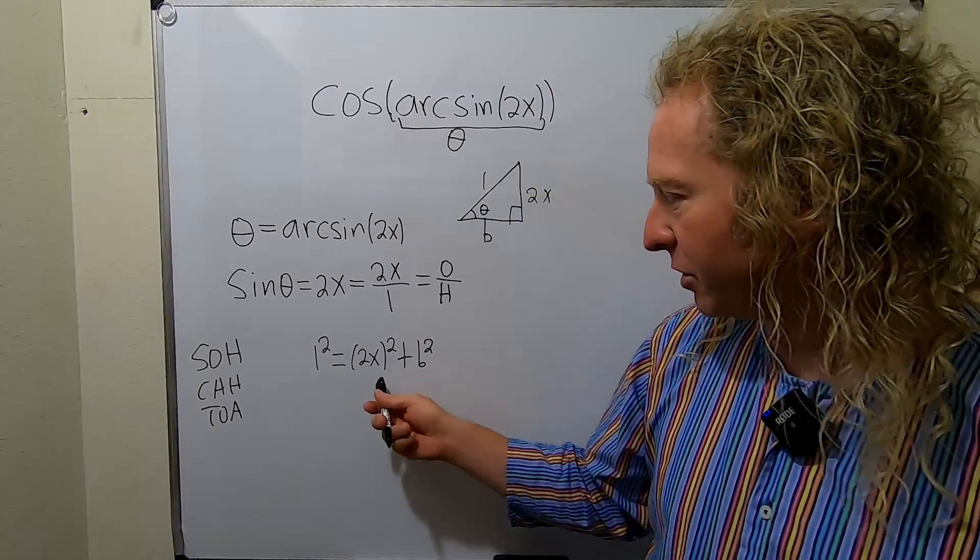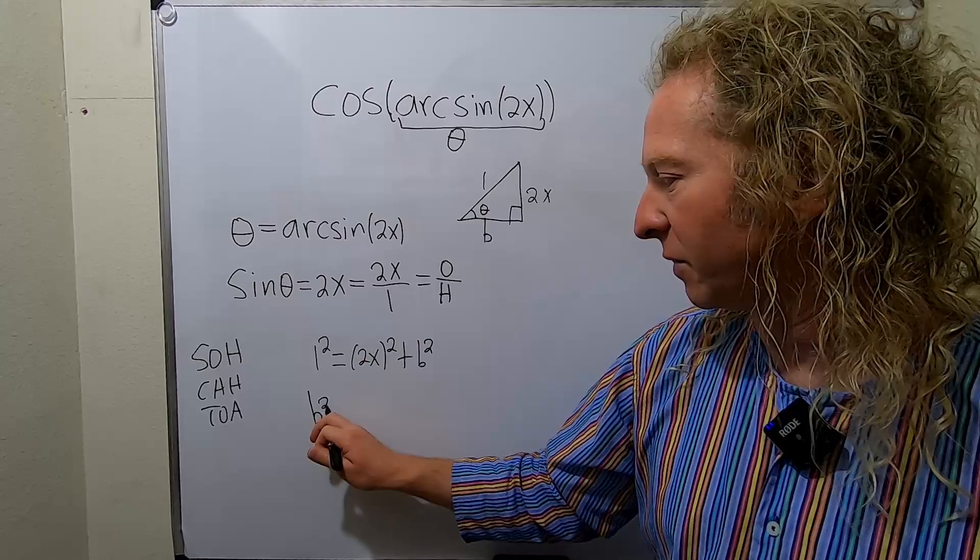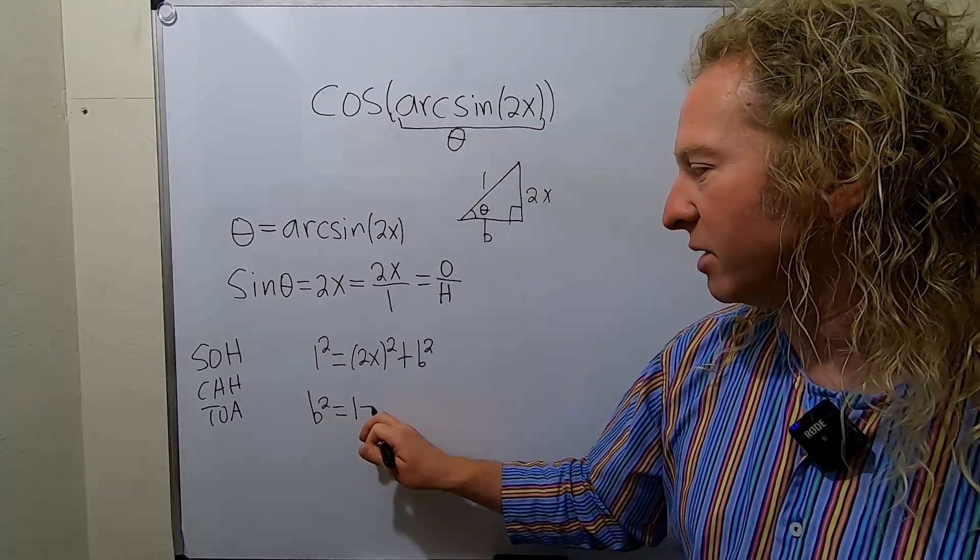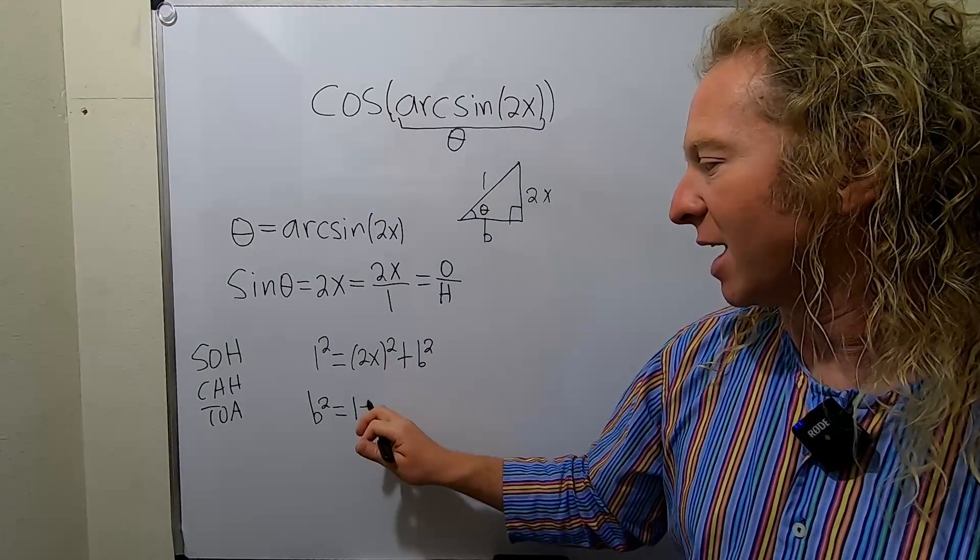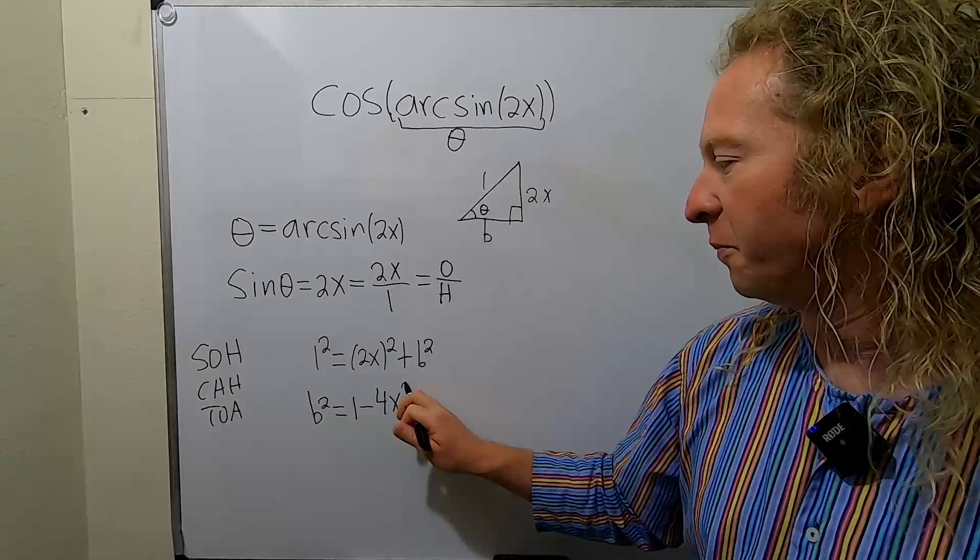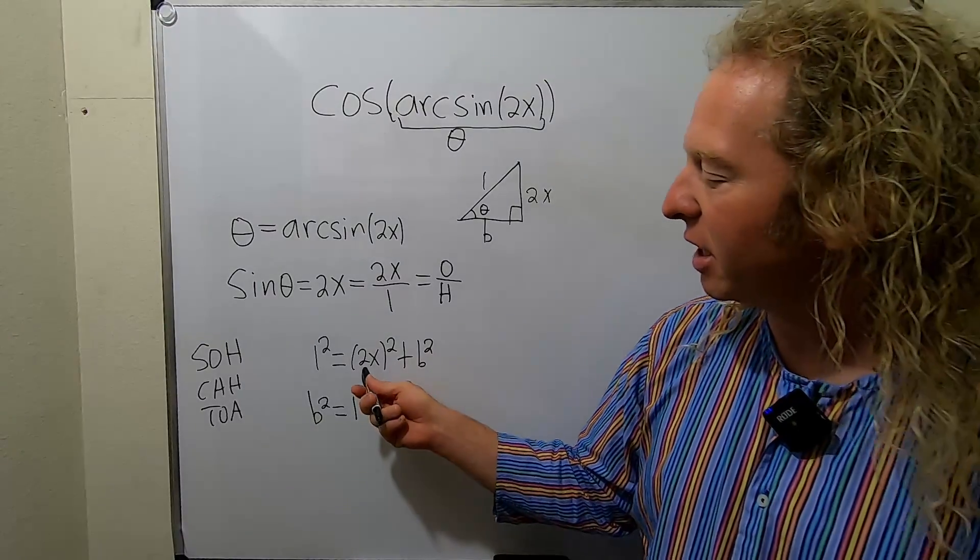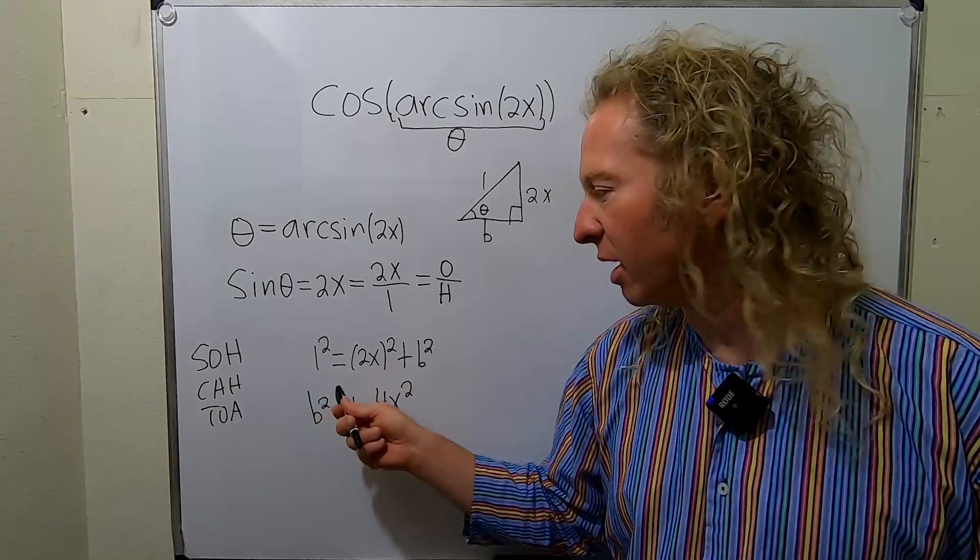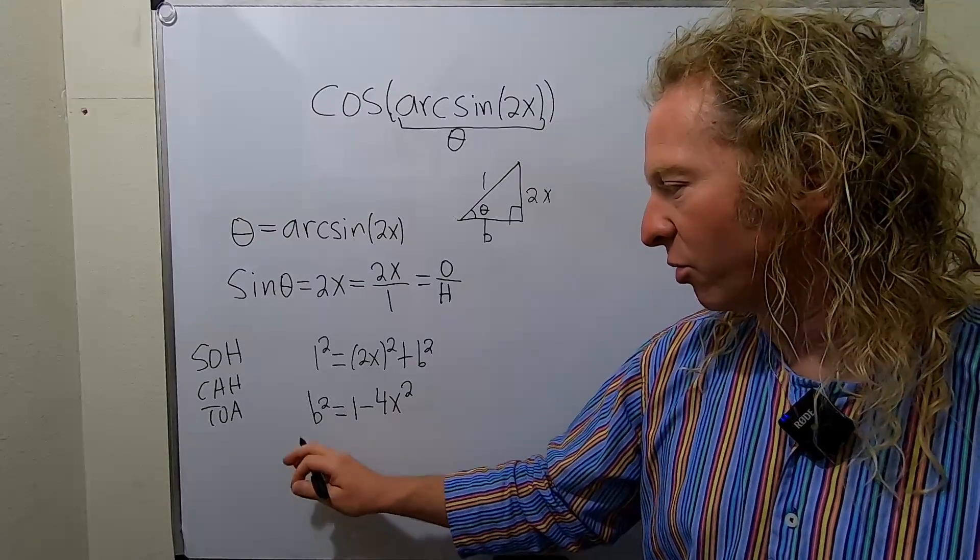Solve for little b. So we'll subtract this piece. So we have b squared equals 1 minus, let's go ahead and multiply this out, 4x squared. See, what I do there, basically I subtracted this over to the other side. This is really 4x squared.